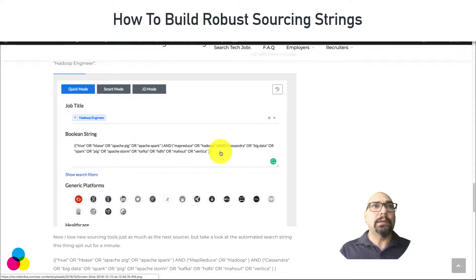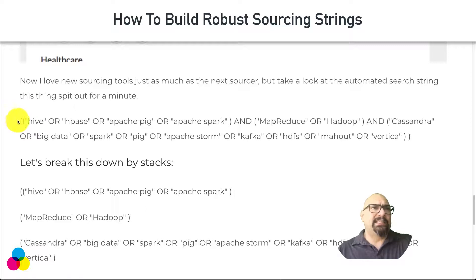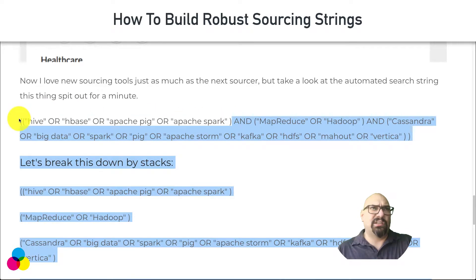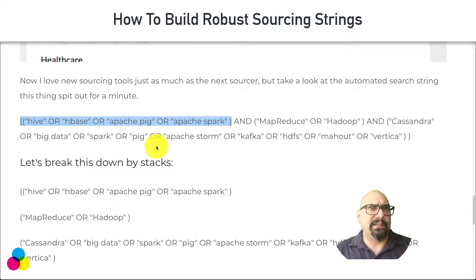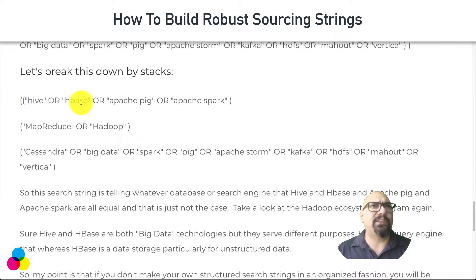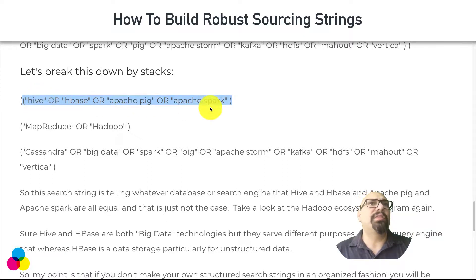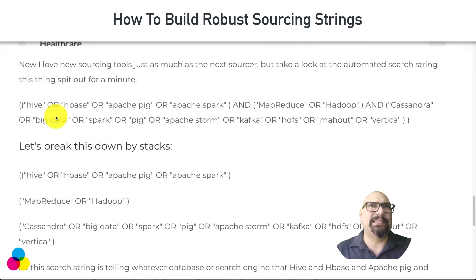The problem is if you dig deep and look at just the first section of that string, here's what you're doing: you're telling the database — LinkedIn or anything else you're searching — 'give me the word Hive, HBase, Apache Pig, or Apache Spark.' In other words, just return one of these results. You're telling the ATS or search engine these are all the same to me, so just find any one of them because any one will do.